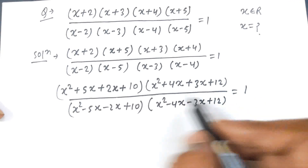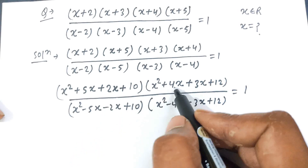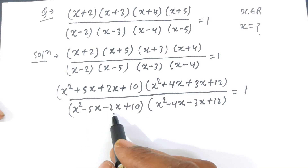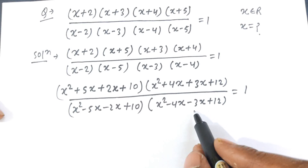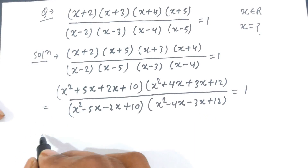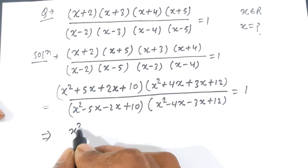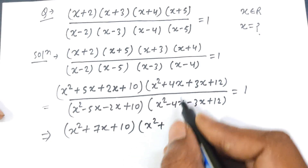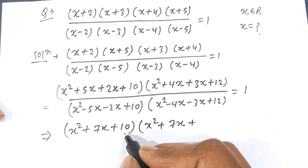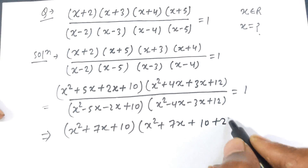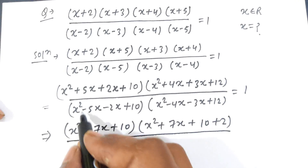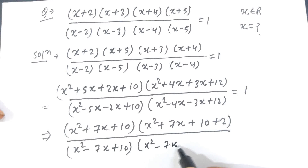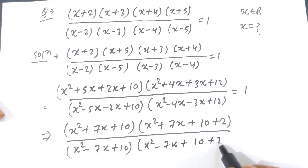Now combining like terms: in the numerator, 5x + 2x = 7x and 4x + 3x = 7x. In the denominator, -5x - 2x = -7x and -4x - 3x = -7x. So the numerator becomes (x² + 7x + 10)(x² + 7x + 12), where 12 = 10 + 2. The denominator becomes (x² - 7x + 10)(x² - 7x + 12), where 12 = 10 + 2. This equals 1.